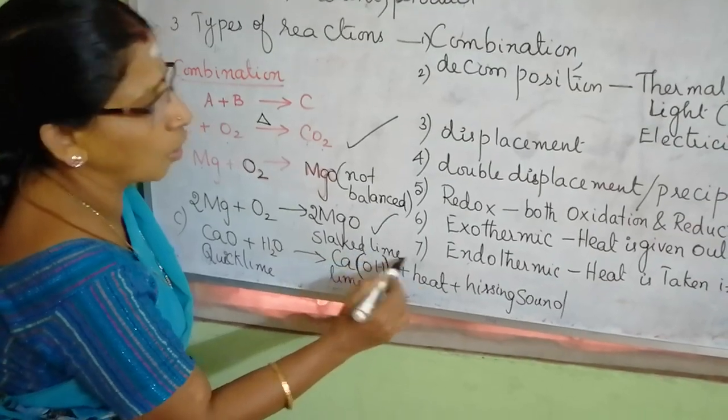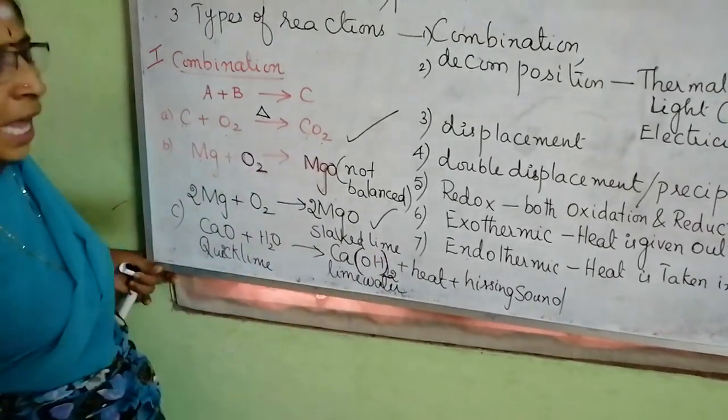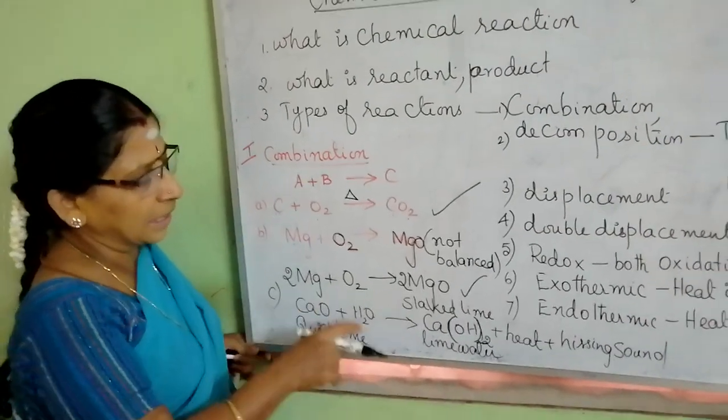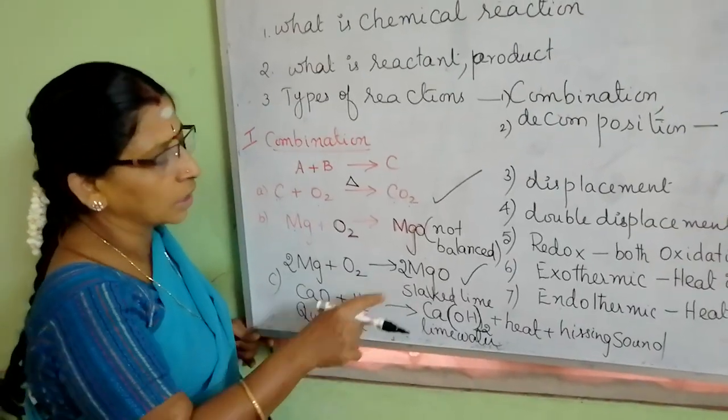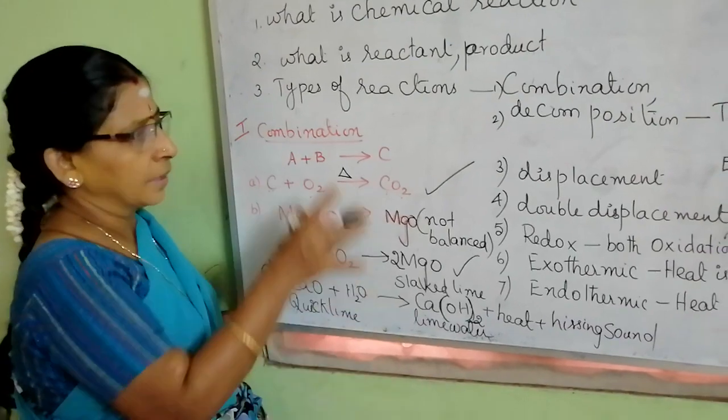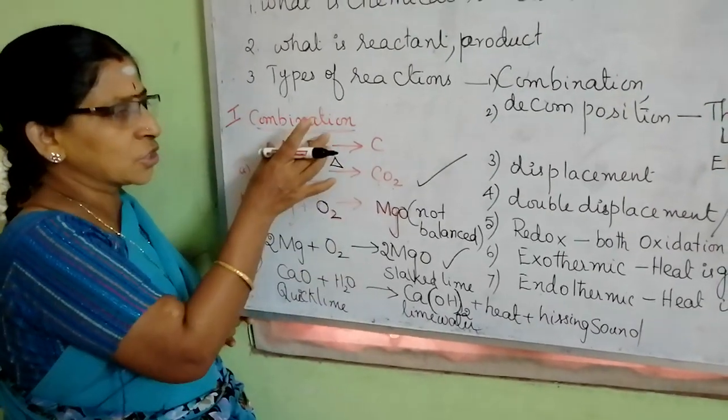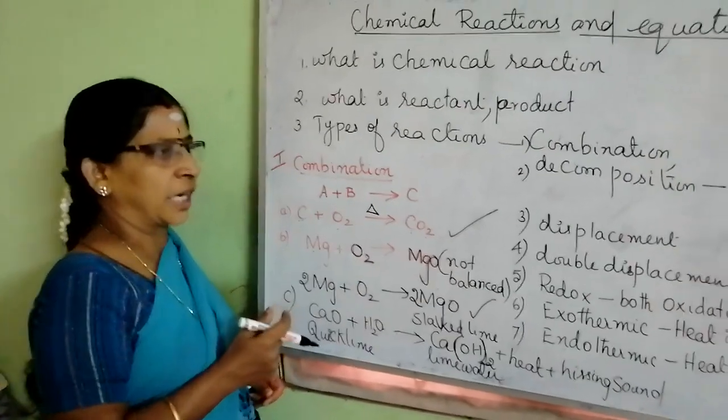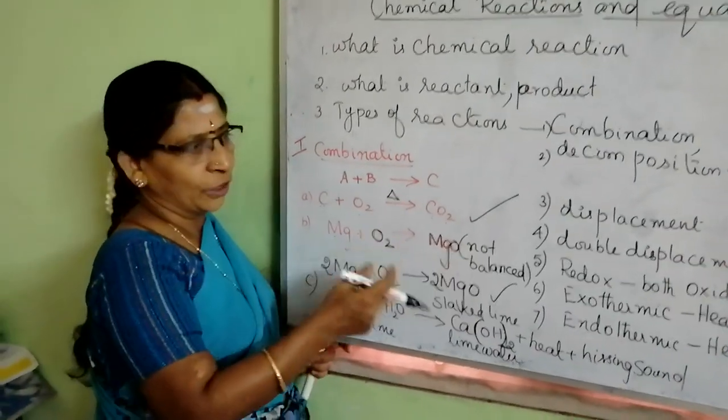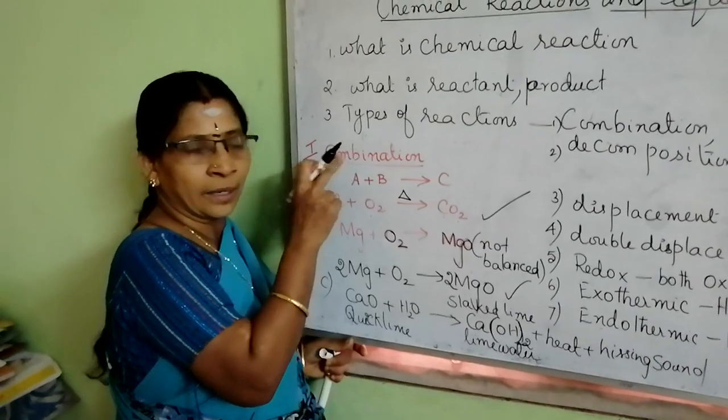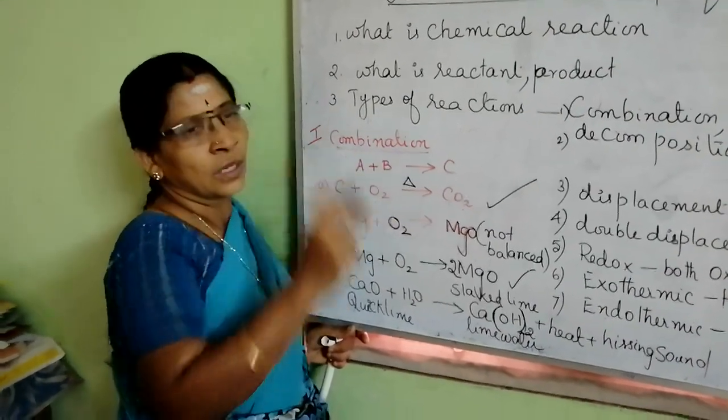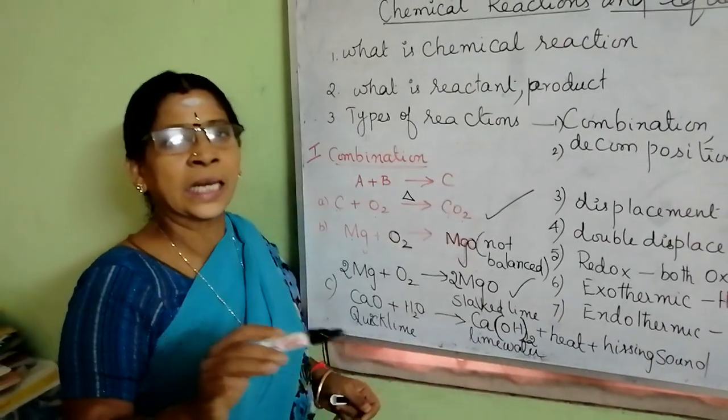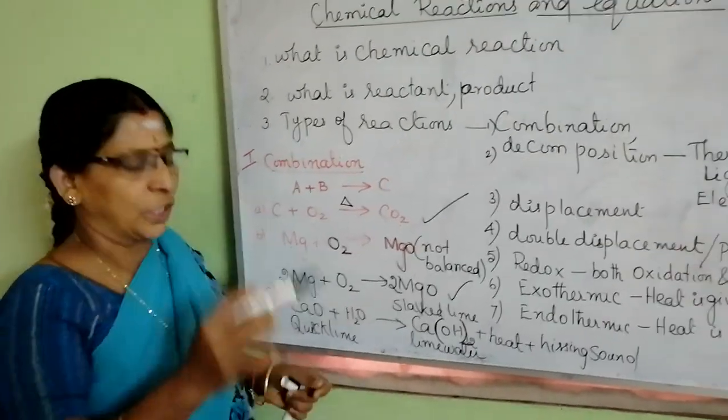This process is called slaking of lime. Which one is slaking? Lime is getting slaked. So, it is called slaking of lime. This is about combination reactions. We can see many examples for combination reactions. In the later on videos, I will show you the more examples of combination reactions. Now, let us see about decomposition reactions in the next video.